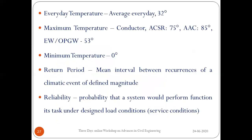Insulators play a major role in transmission line towers. For temperature parameters in the Indian scenario: average everyday temperature is 32°C; maximum conductor temperature is 75°C for ACSR and 85°C for AAC; earth wire maximum is 53°C; minimum temperature is 0°C in tropical regions, or −5°C in snowy regions.